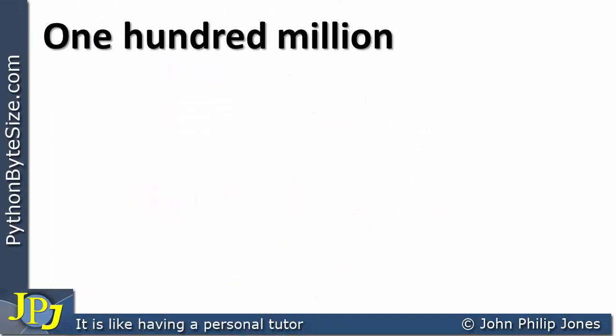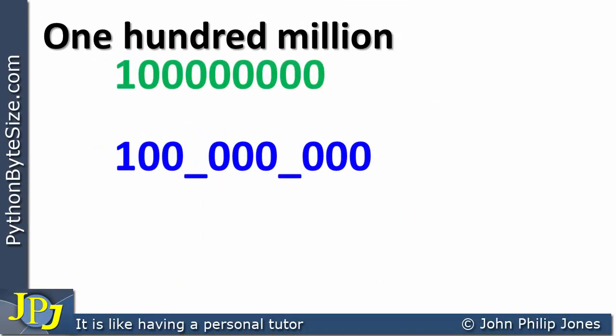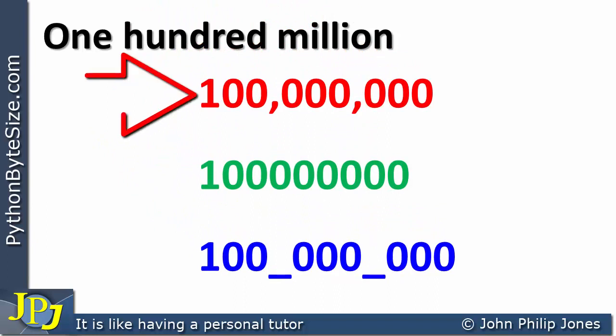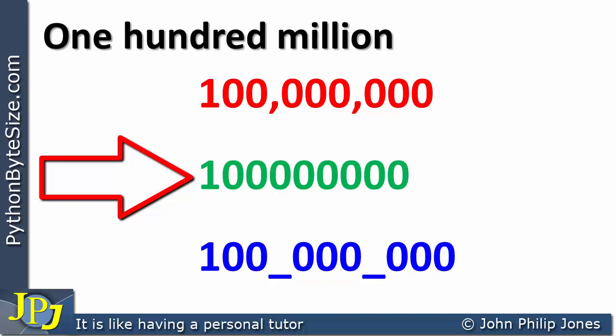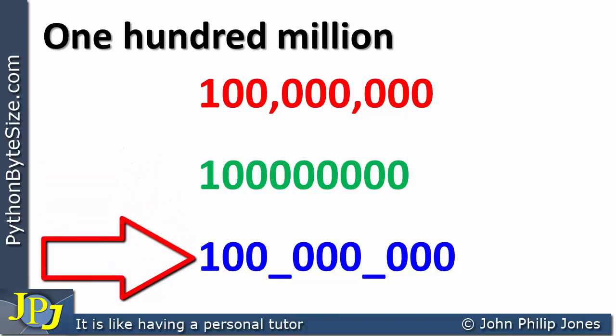So if we go to a bigger number again, 100,000,000, and we consider how we would write that out, these are the various ways. This is how we would write it on a piece of paper. We could use it like this in Python, but I would suggest that's difficult to read. And we can use it in this way, where it is clearly 100,000,000.